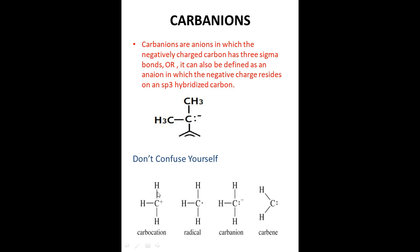Don't confuse these terms: carbocation, radicals, carbanions, and carbene. A carbocation has three sigma bonds as in carbanions but carries a plus charge. A radical has three sigma bonds but carries just a single electron — just a single non-bonded electron. Unlike a carbanion which has three different bonds with two non-bonded electrons. A carbene also has two sigma bonds but two non-bonded electrons.